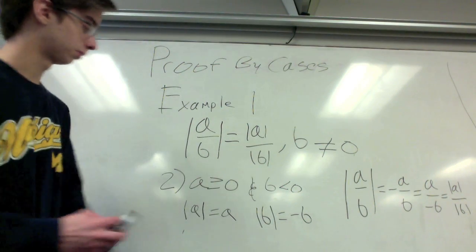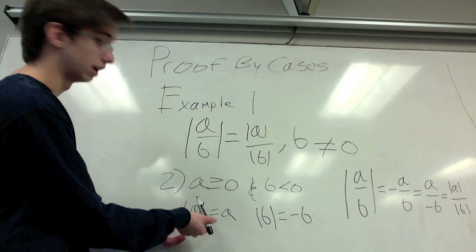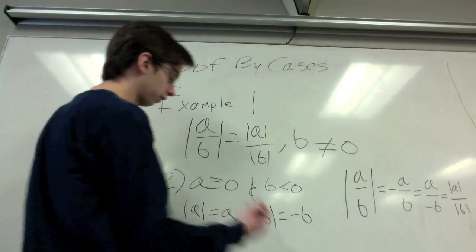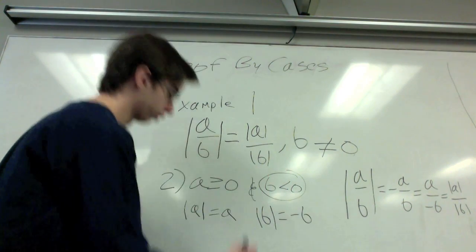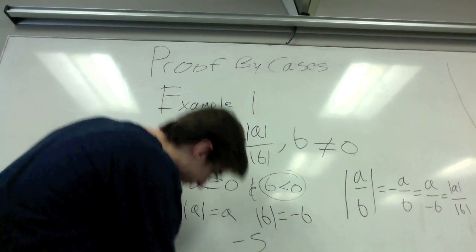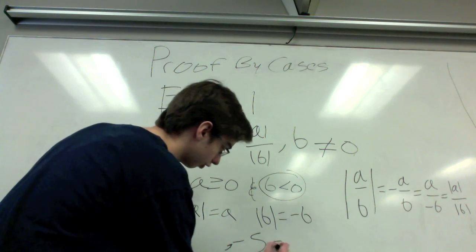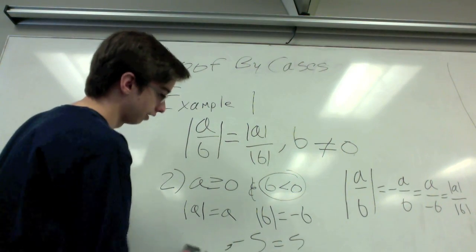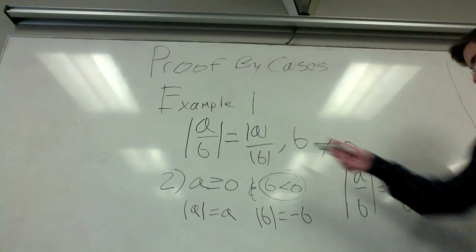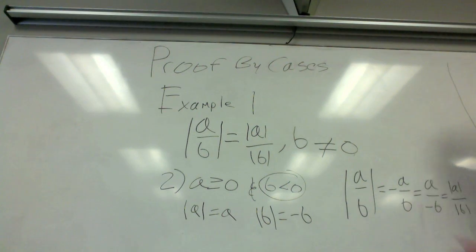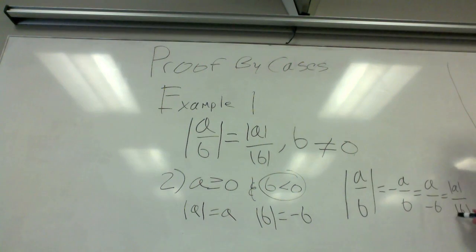Case two: A is greater than or equal to zero and B is less than zero. Because A is always positive, the absolute value of A is always positive. In this case, the absolute value of B equals negative B — this might be tricky, but B is always negative here, so if B is negative five or negative ten, taking the negative gives us positive five and ten. So the absolute value of B equals negative B. We bring the negative down, and since A equals the absolute value of A and negative B equals the absolute value of B, the equation is proved.